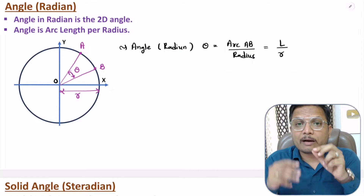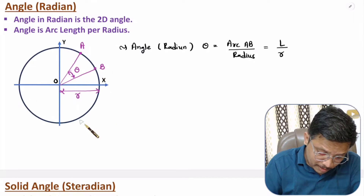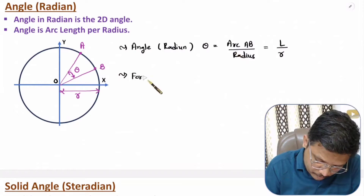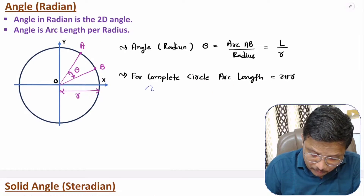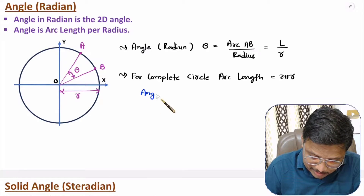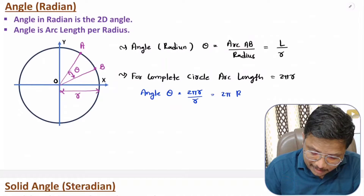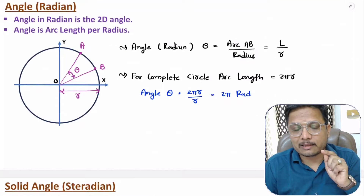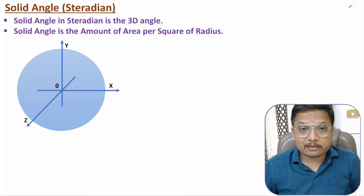Now if you want to calculate the angle for a complete circle, the arc length of a complete circle is 2πr. So for a complete circle, angle = 2πr divided by radius r, which gives 2π radian. So 2π radian is the angle of a complete circle.